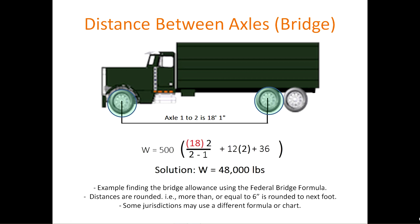Distance between the axles, also called the bridge. In this example, we've measured from axle one to axle two — the measurement is 18 feet, one inch. If the inches are six or greater, we round up to the next foot. In this example, the inches are one, so we round down to 18 feet.